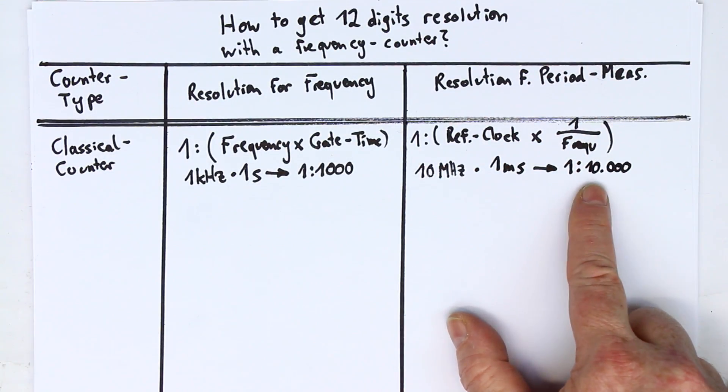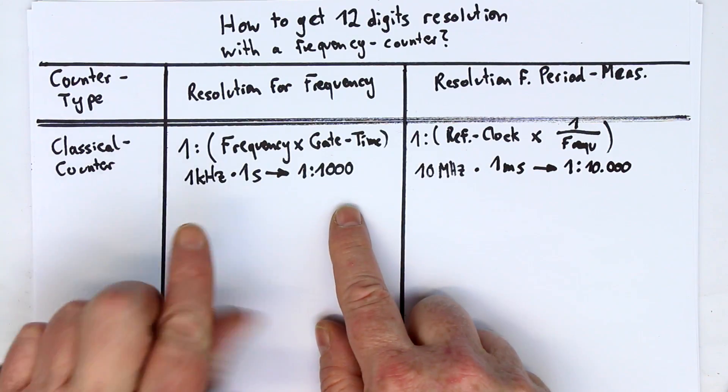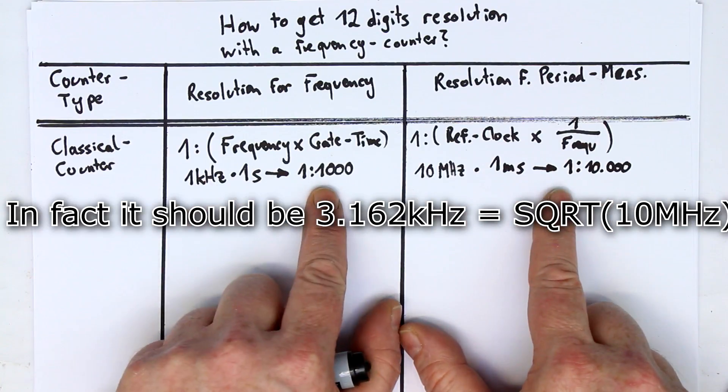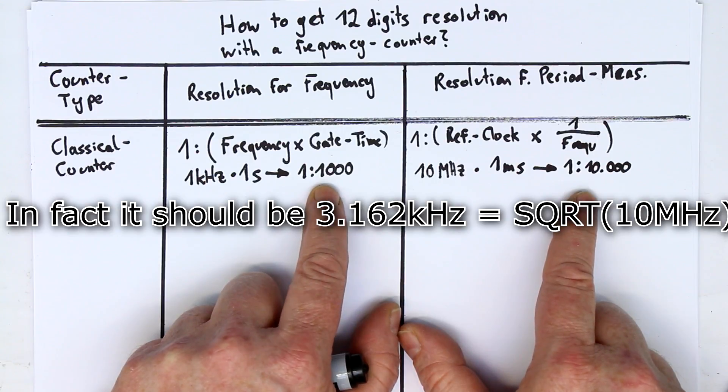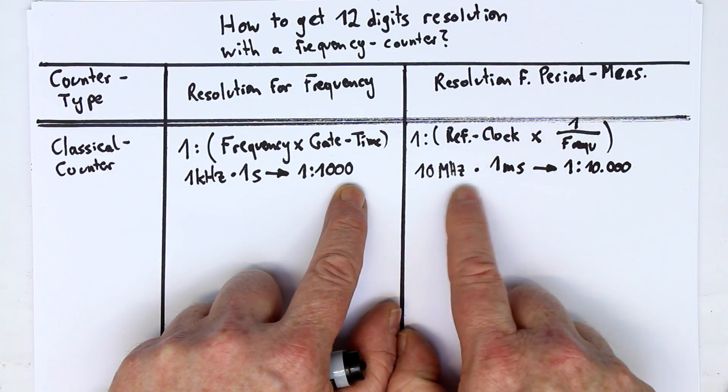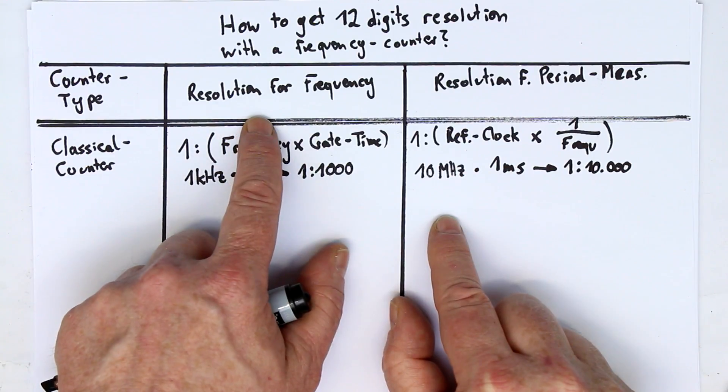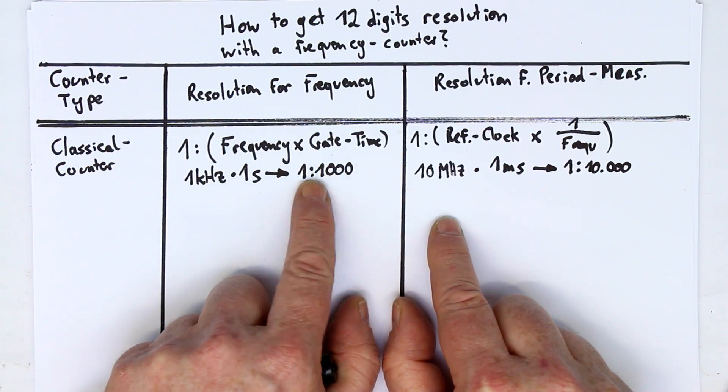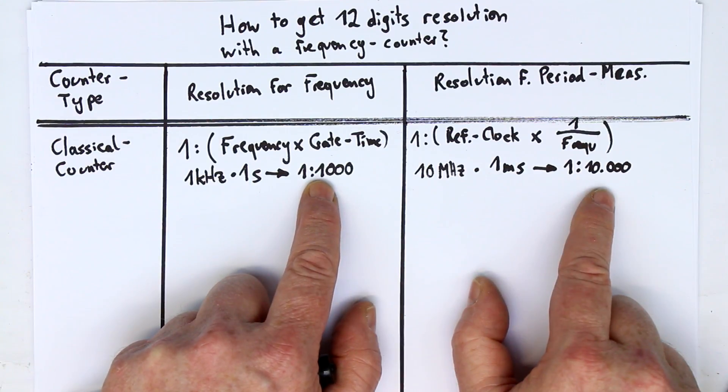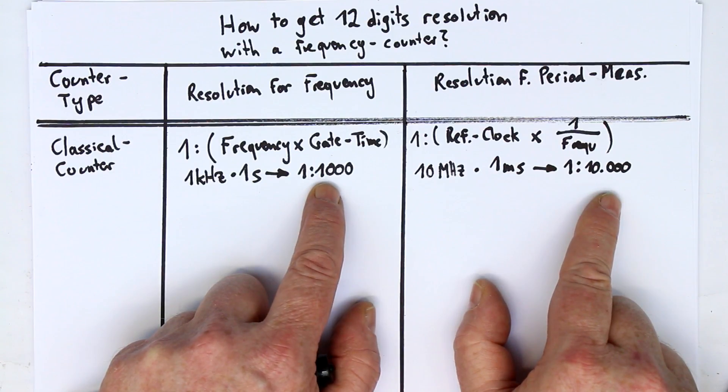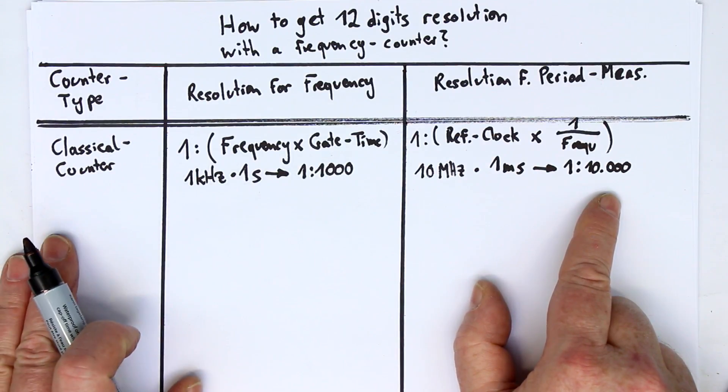And so, although this is one significant digit better, if we would go to 3.33 kilohertz, we would get exactly the same result on both sides. So, the maximum resolution you can get with a classical counter, at worst case, is 1 in 3,333, if you use 10 megahertz reference clock in period measurement, or 1 second of gate time in frequency measurement. That's just three and a half digits worst case. And that's the reason why a classical counter is, in today's world, not the counter of choice.